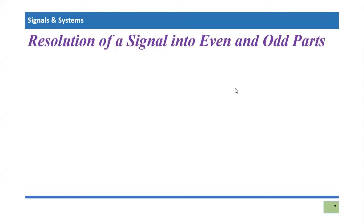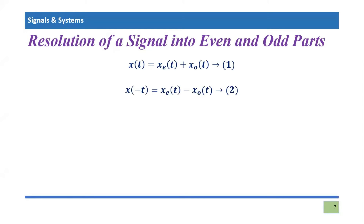Now let's solve the equation for the odd part. So the equations are: x(t) = x_e(t) + x_o(t) — that was the original equation — and x(-t) = x_e(t) - x_o(t) — the time reversal equation.